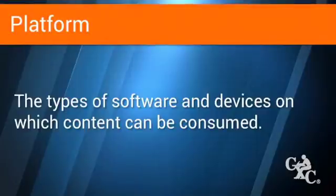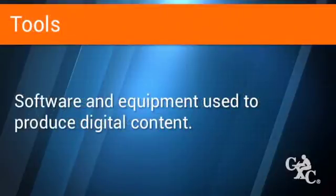So let's talk about the platforms and tools. In the context of digital publishing, the term platform describes the types of software and devices on which digital content can be consumed. The term tool refers to the software and equipment used to create these products and digital content. In a sense, the internet can be considered the master platform. Most modern platforms depend on the internet, and even mobile devices make use of the internet.